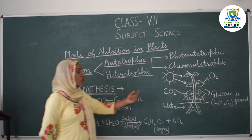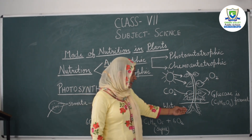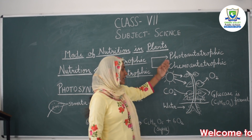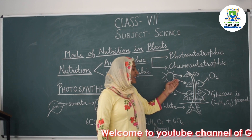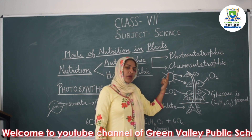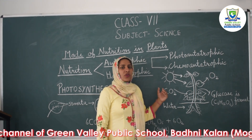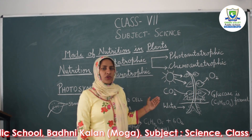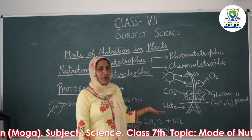Next, water is absorbed from the soil with the help of roots. Sunlight is absorbed by green leaves, which have chlorophyll that can absorb sunlight energy. So these are the raw materials used for the process of photosynthesis — for making food by green plants.